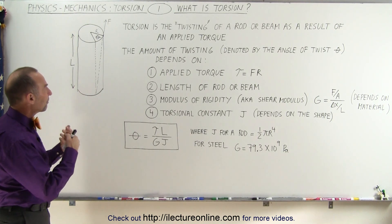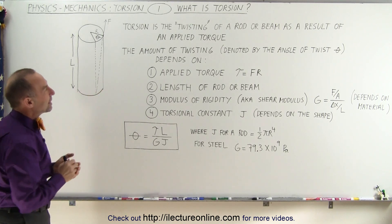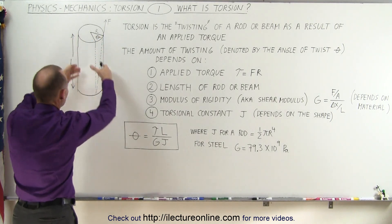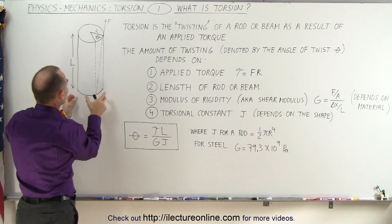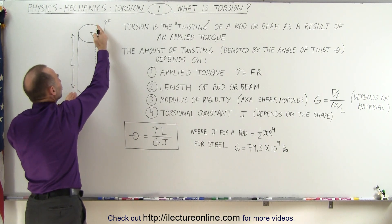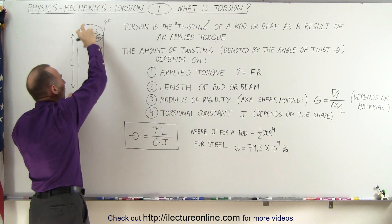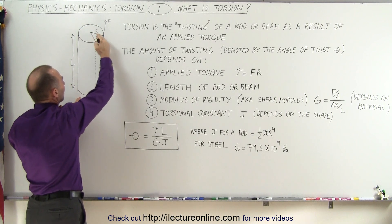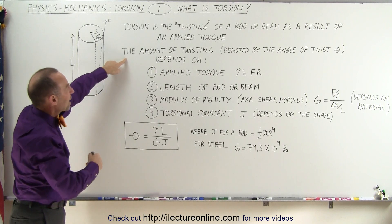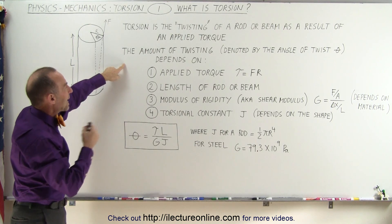When we look for the definition of torsion, we can best define it as a twisting of a rod or a beam as a result of an applied torque. Here we've drawn a picture of a rod. It has length L, fixed at the bottom where it cannot move, and we're applying a force tangential to the side, therefore causing a torque or a moment to try and twist the top of this rod. The amount of twisting at the top, denoted by the angle theta, is called the angle of twist.